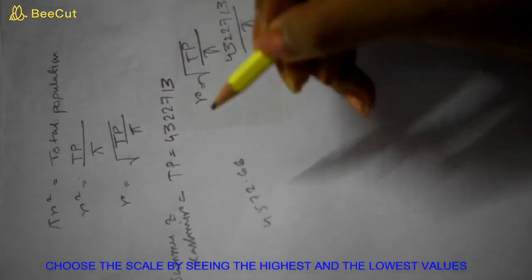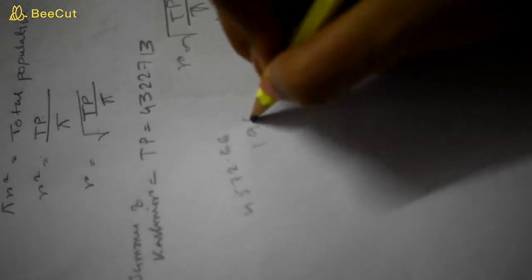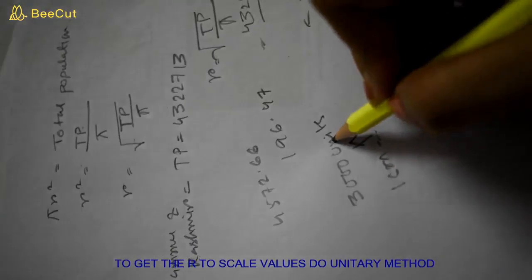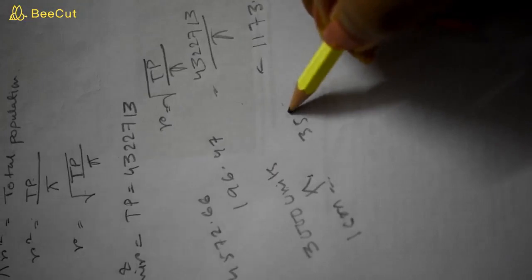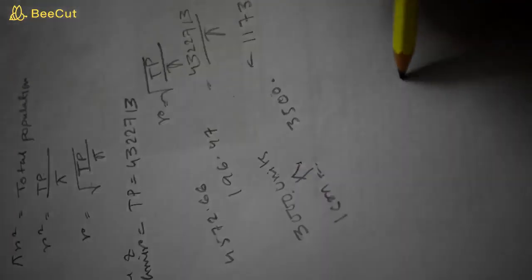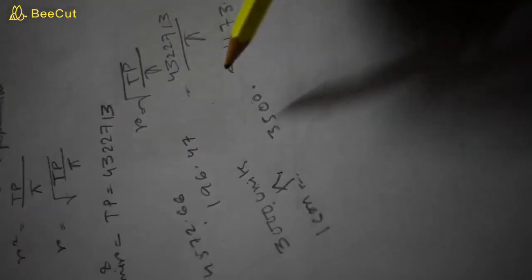For this data, the highest R is 4572.66 and the lowest is 196.47. For this particular sum, I have chosen 3000 units — meaning one centimeter will represent 3000 units. You can also choose 3500 units and so on. You will use the unitary method: 3000 units is represented by one centimeter, so one unit will be represented by 1/3000, and then you will get the R to scale for the union territories.